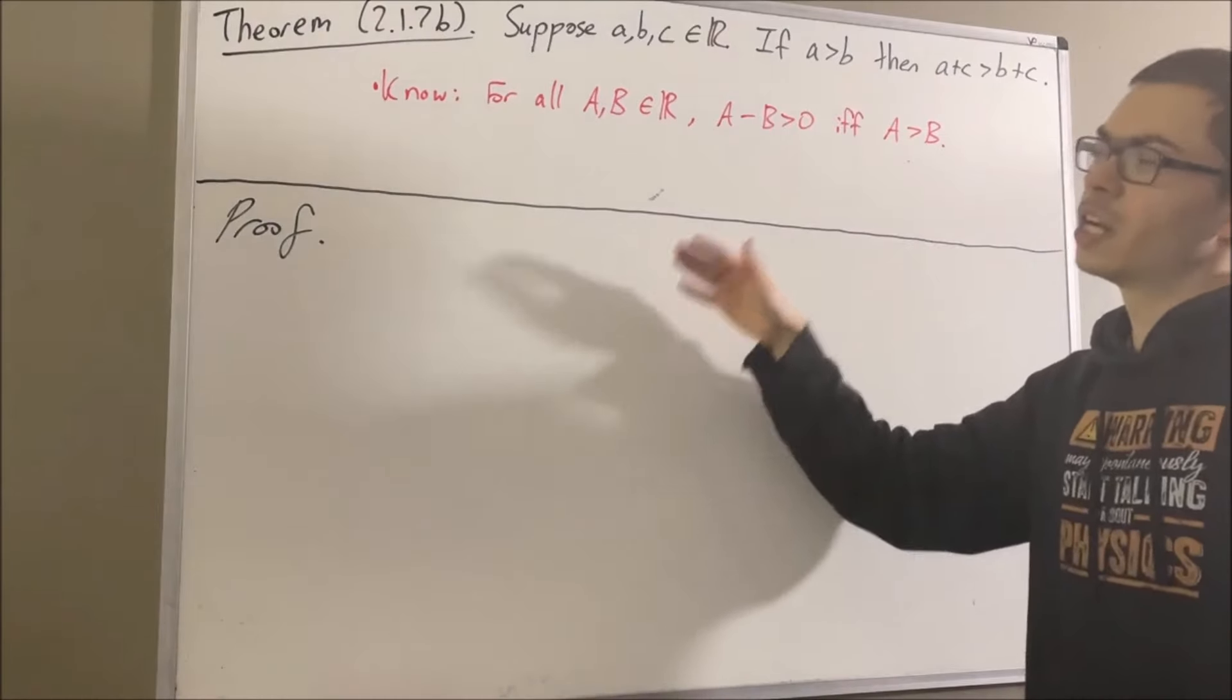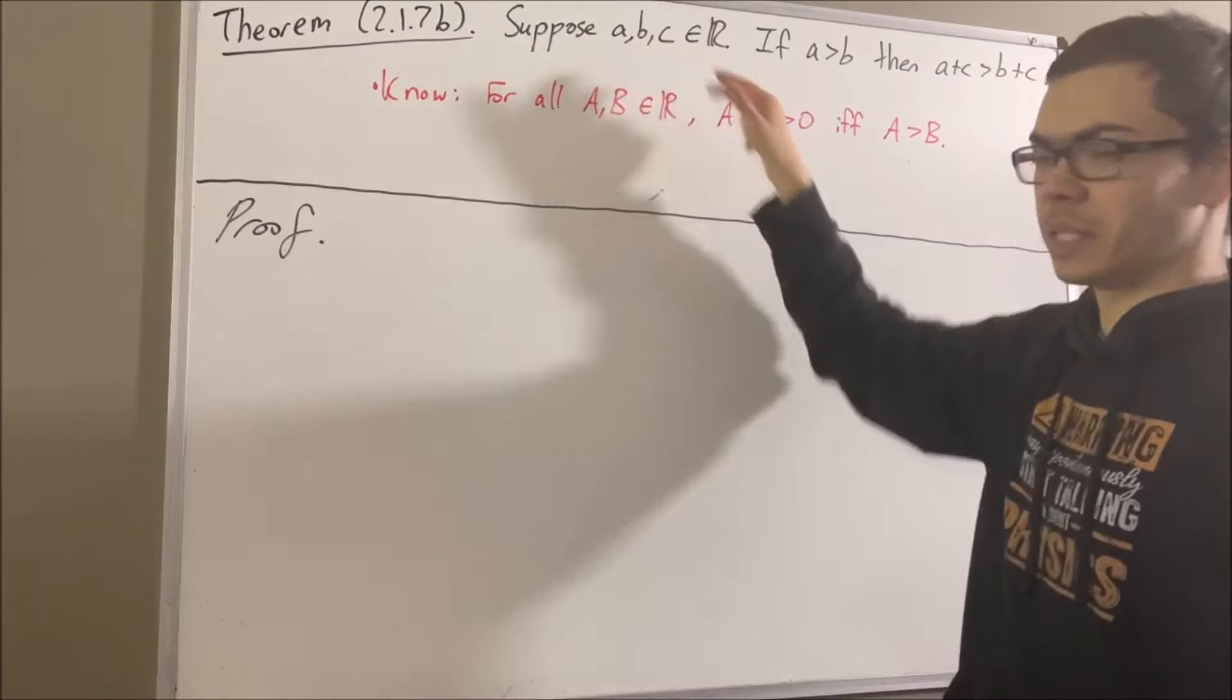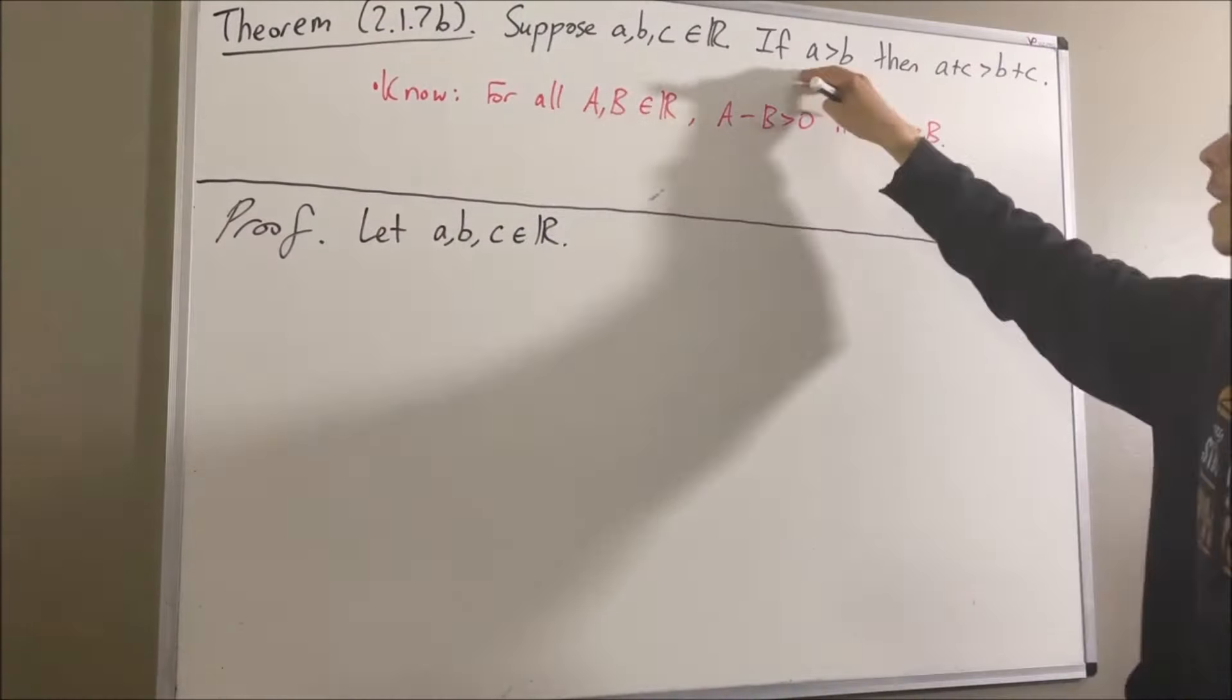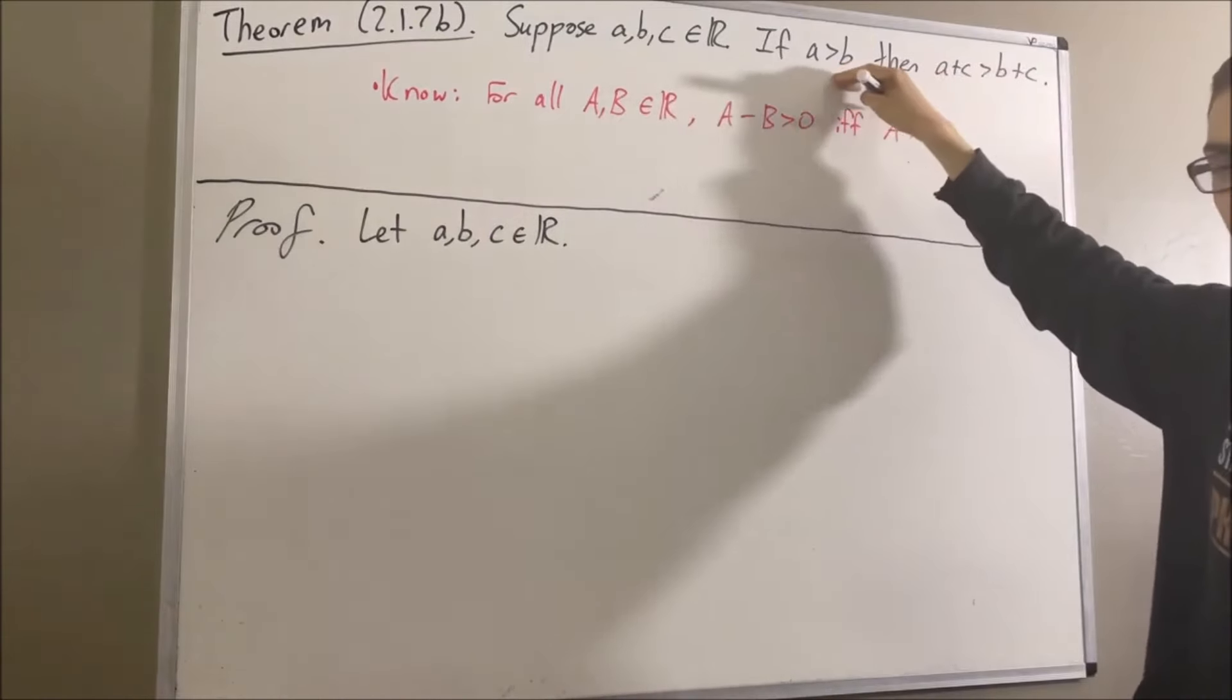So now let's get into the proof. To start out the proof, let's give ourselves three arbitrary real numbers A, B, and C. And our goal from here is to prove if this is true, then this is true. So let's assume that A is greater than B.